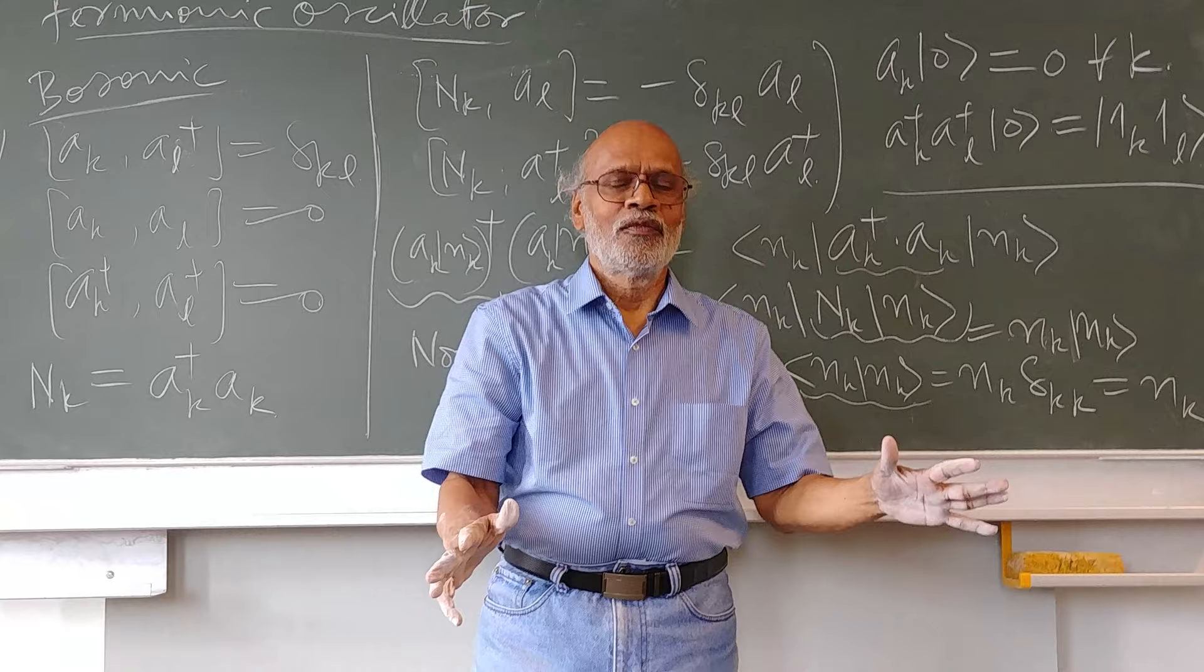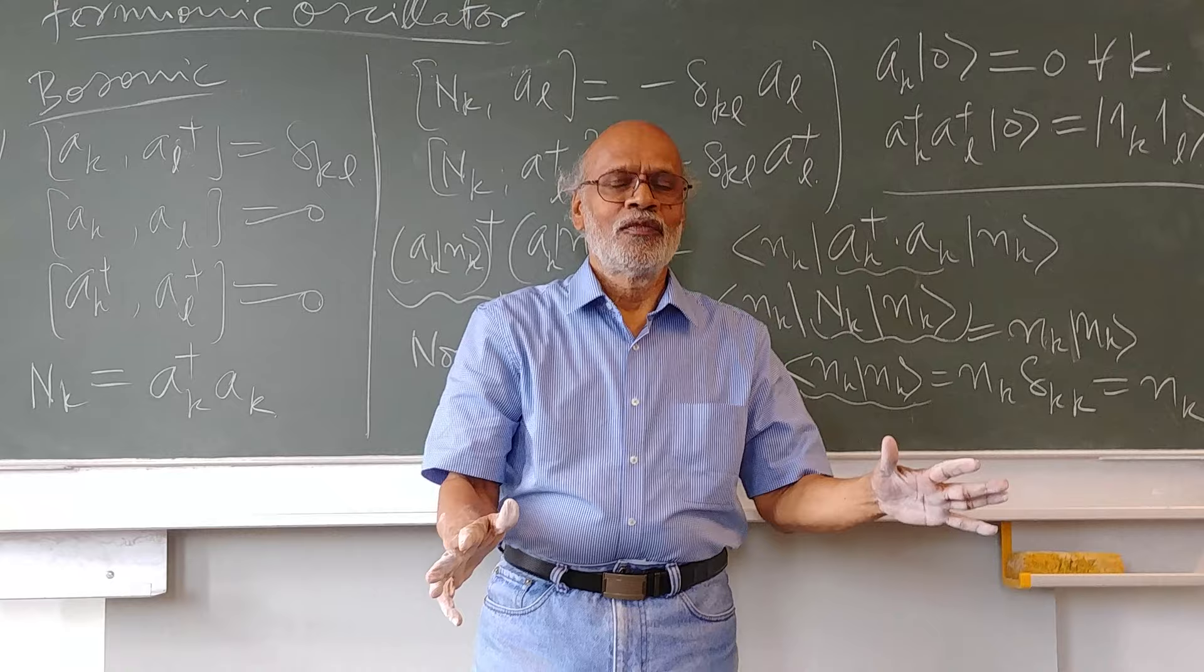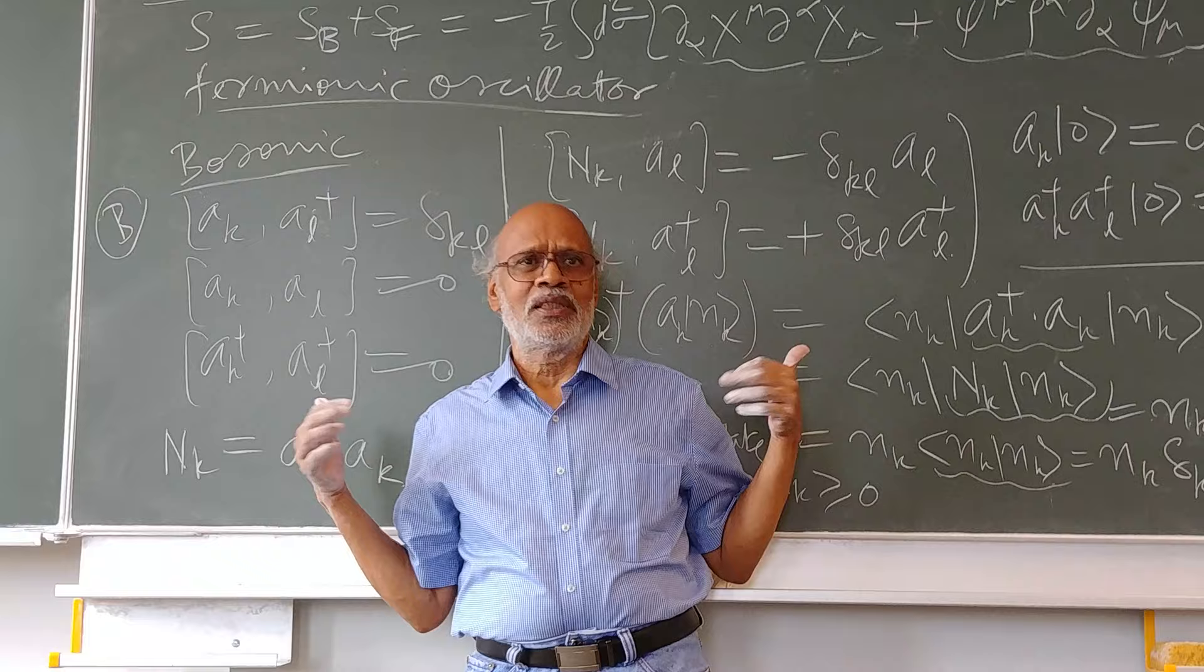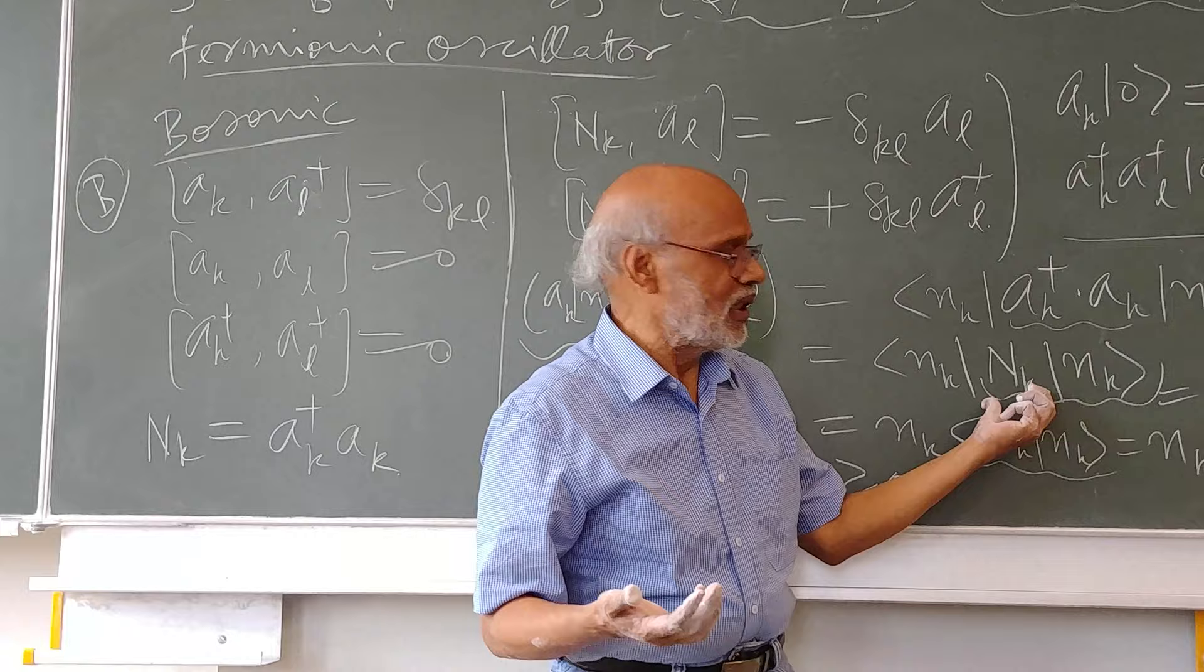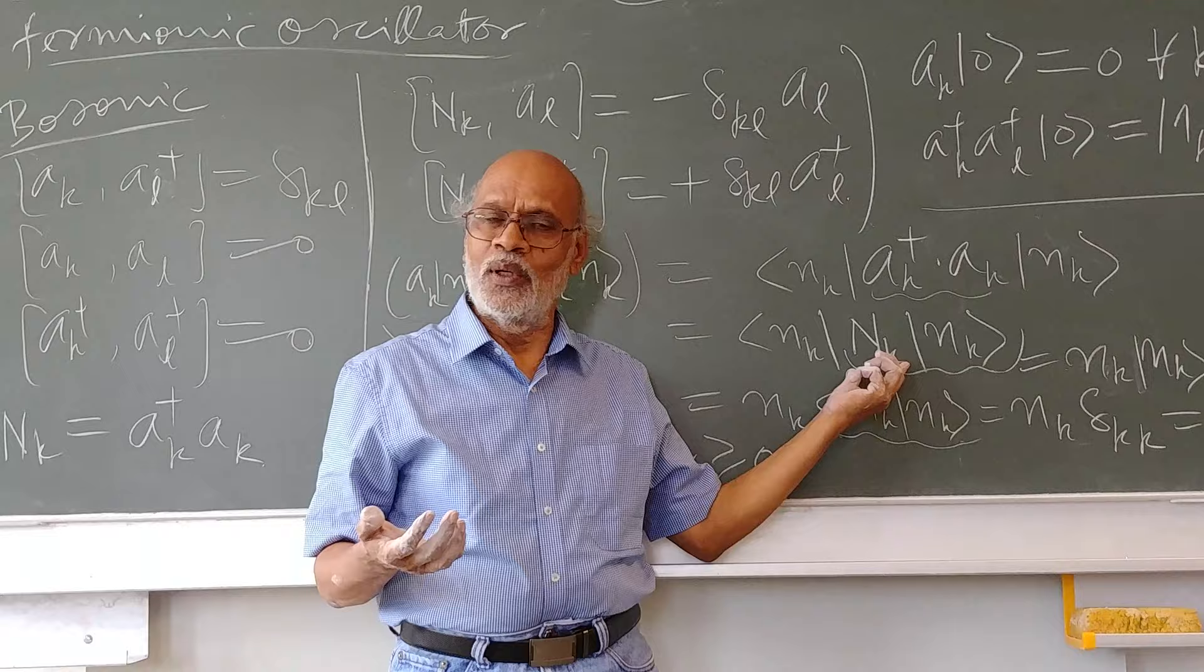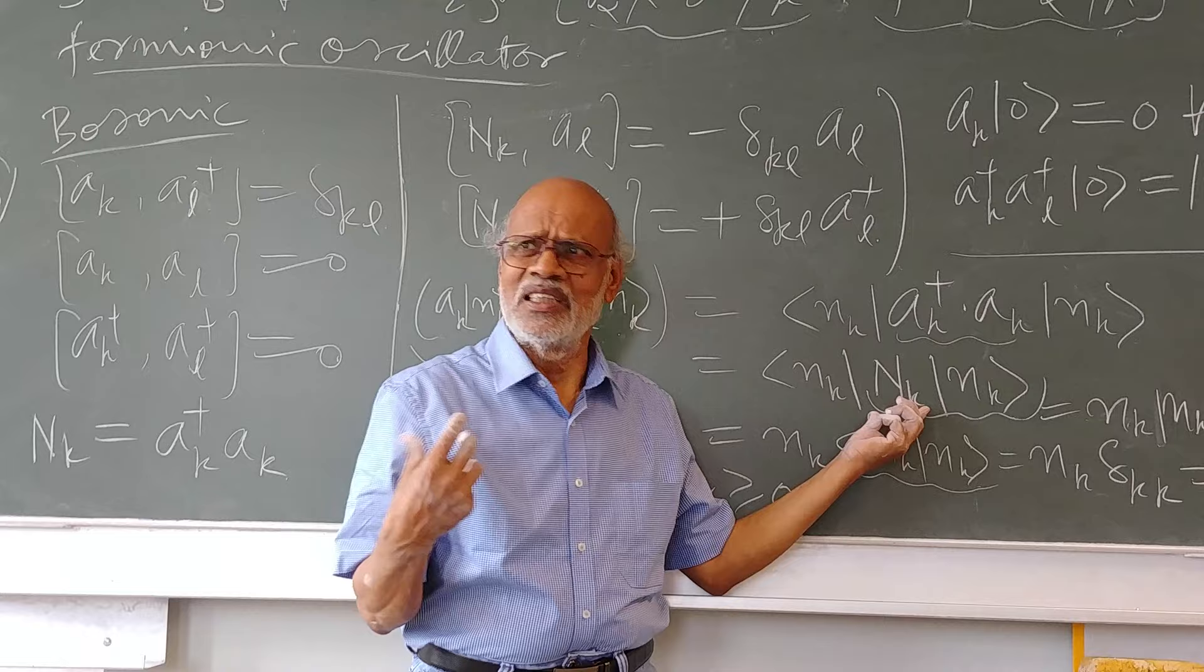Now we will see as soon as we go to the fermionic oscillator, these are the main characteristics of this bosonic oscillator. As soon as we go to the fermionic oscillator, this will drastically change. The eigenvalues of this Nk, the number operator, would now be restricted. There will be only two eigenvalues, 0 and 1. For fermionic oscillator we derive it. It is a very short derivation but conceptually it is very meaningful and very important.